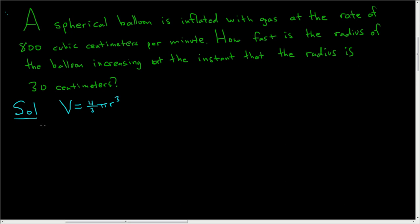So we have that. And let's read the question again and figure out what we're given, and then figure out what we need. So we're told that the balloon is inflated with gas at the rate of 800 cubic centimeters per minute.